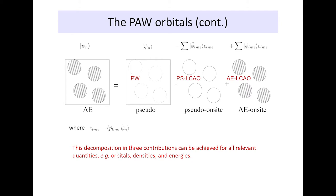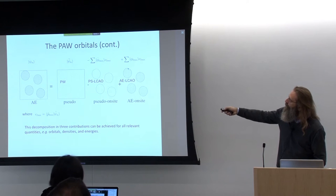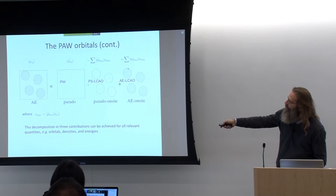There are three contributions. One is the plane wave part, which lives in the whole cell — the plane waves extend over the whole simulation box. Then there's a part that we subtract inside the PAW spheres in terms of the pseudized partial waves. And the part that we add in terms of the all-electron partial waves inside these PAW spheres. How much of those things are admixed to our plane wave solution is given by this particular projection.